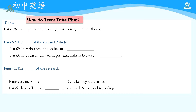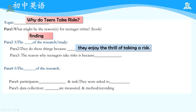接下来关注二到三段。Paragraph 2 and 3 are mainly about the findings of the research. Paragraph 2 focuses on the idea that they do these things because they enjoy the thrill of taking a risk，keyword是thrill，它们就喜欢冒险带来的这种刺激。